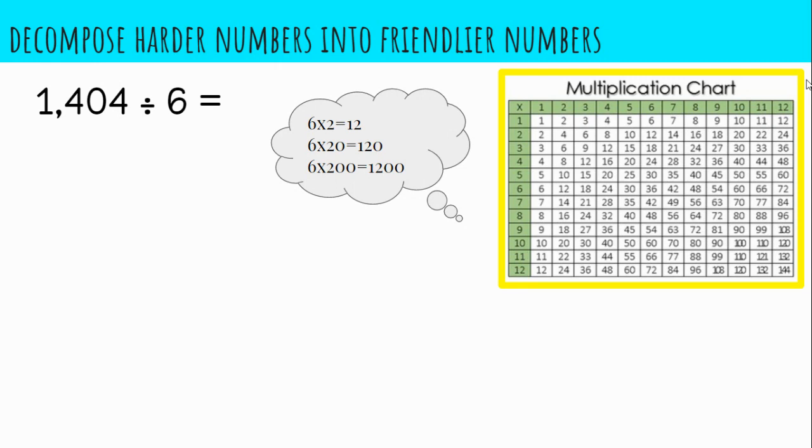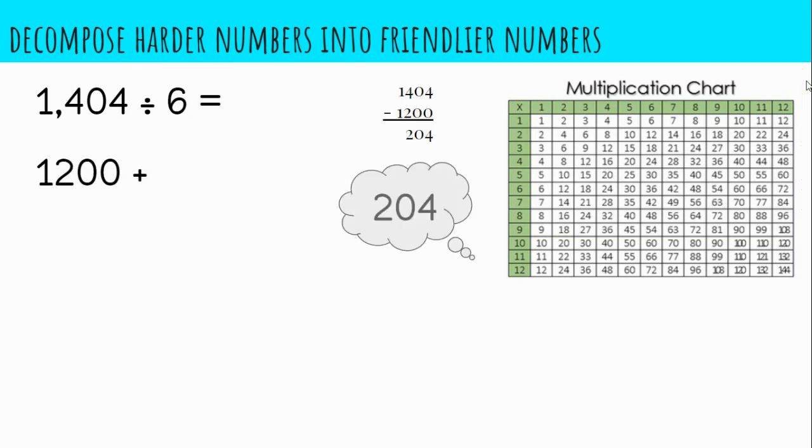I can see that 1,200 would be a friendly number to help decompose that dividend. So if we use 1,200, that leaves 204 left over to consider. So how can I further decompose 204 into friendlier chunks?